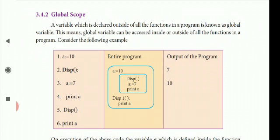The variable a equals 7 is a local scope variable inside the display function. The variable a assigned as 10 is outside the function. This is the program — this is inside the function.